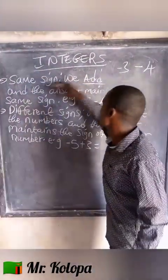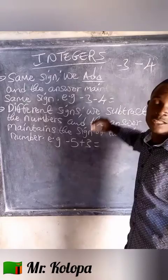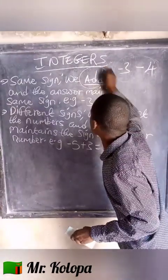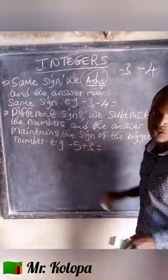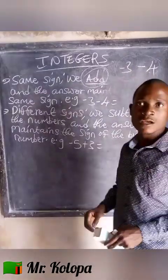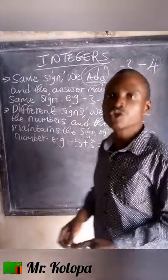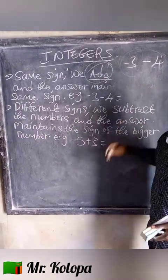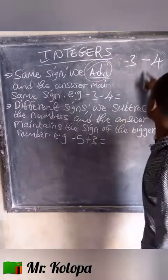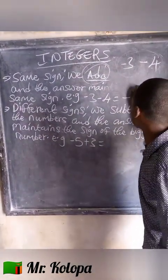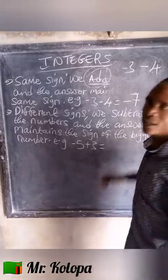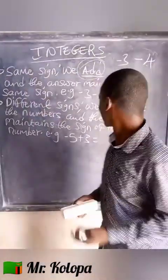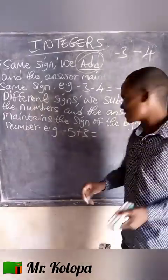They are having the same sign. So what are we supposed to do? You are supposed to add these two numbers. Just say 3 plus 4, which will give you 7. Then the answer should maintain the same sign, which is negative. So the answer here is negative 7. Let's hope you answered this one correctly.